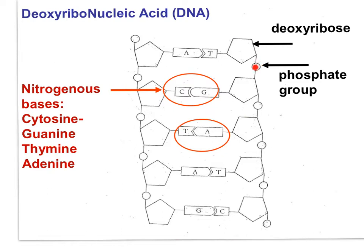The phosphate group of a nucleotide is attached to the third carbon of the sugar. Thus, the covalent links between nucleotides are along each strand of the double helix.